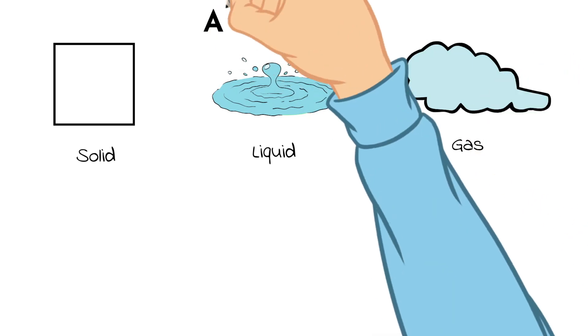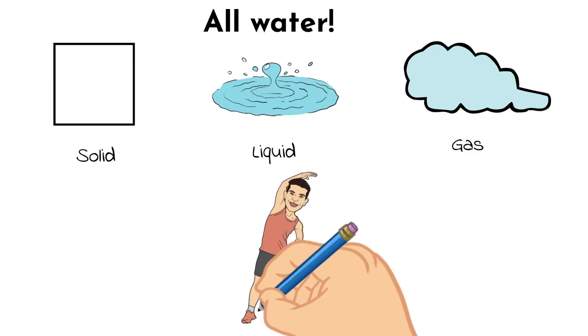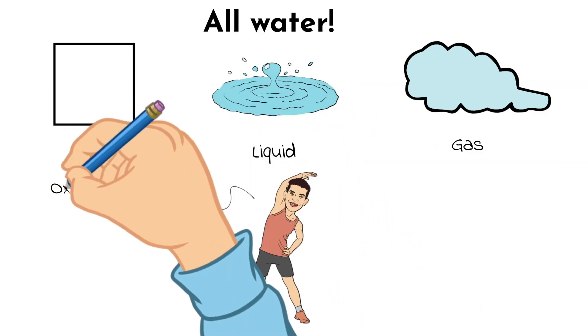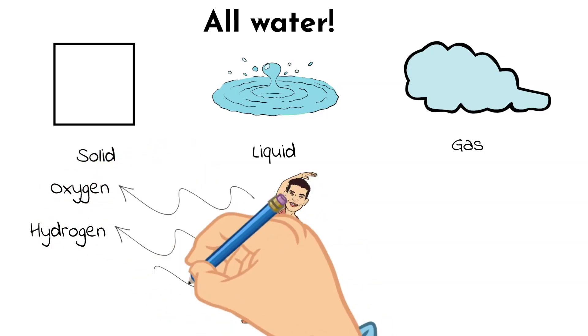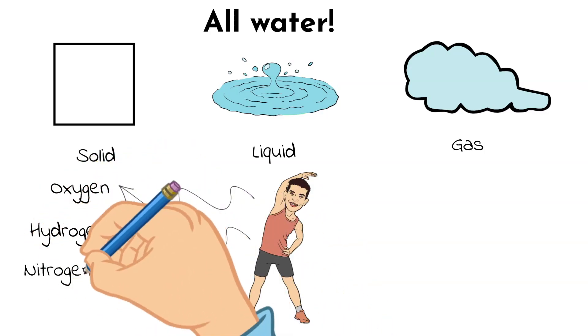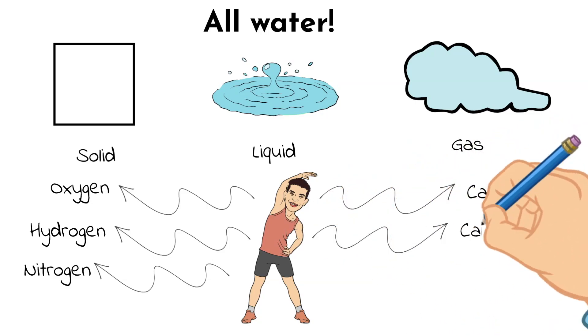The human body is approximately 99% comprised of just six elements, and those elements are oxygen, hydrogen, nitrogen, carbon, calcium, and phosphorus.